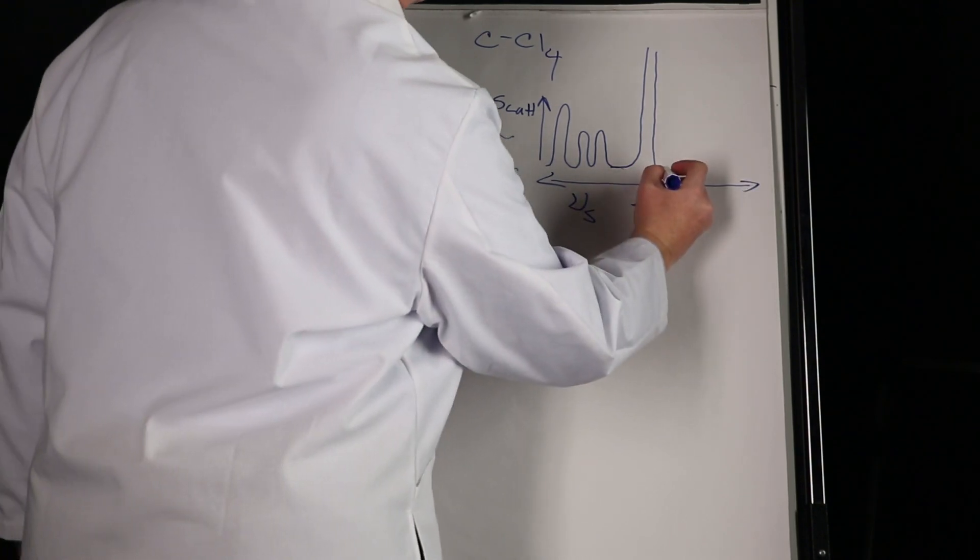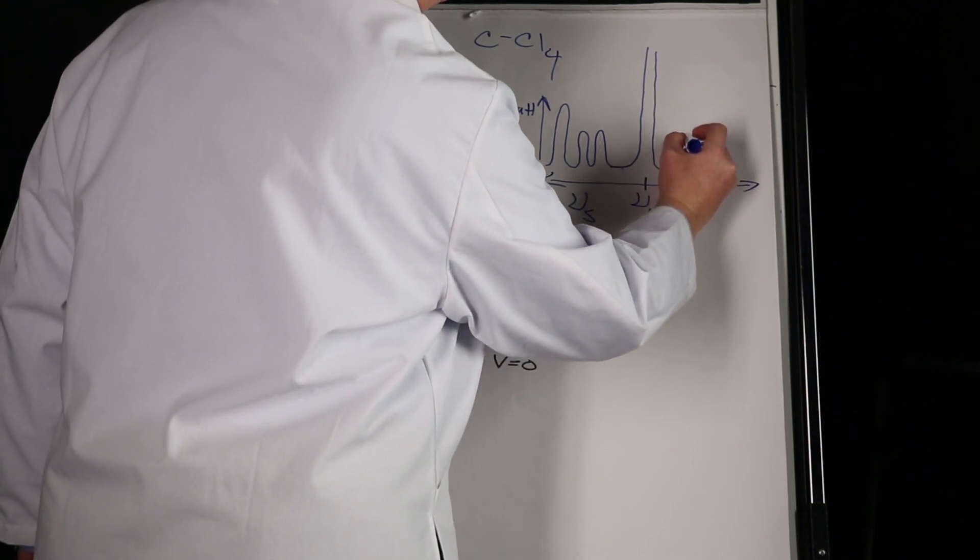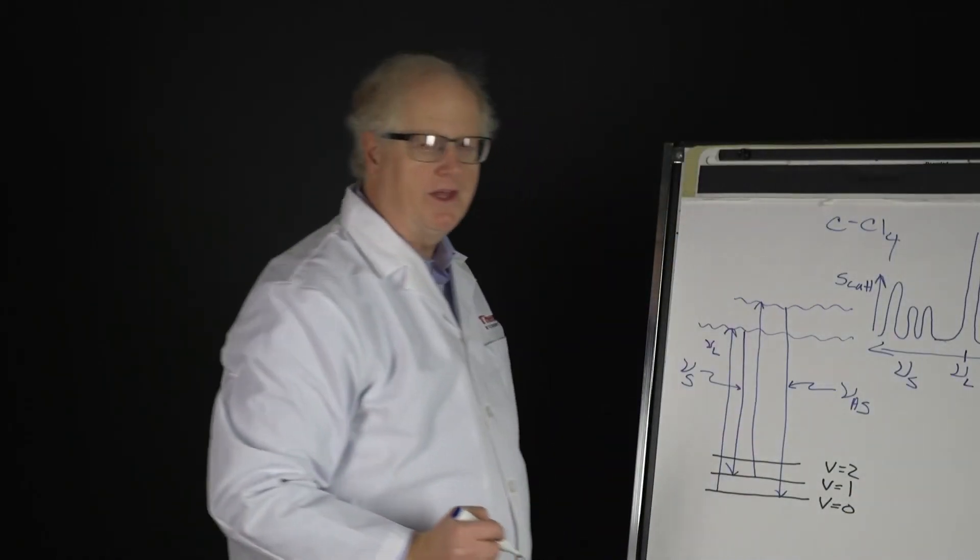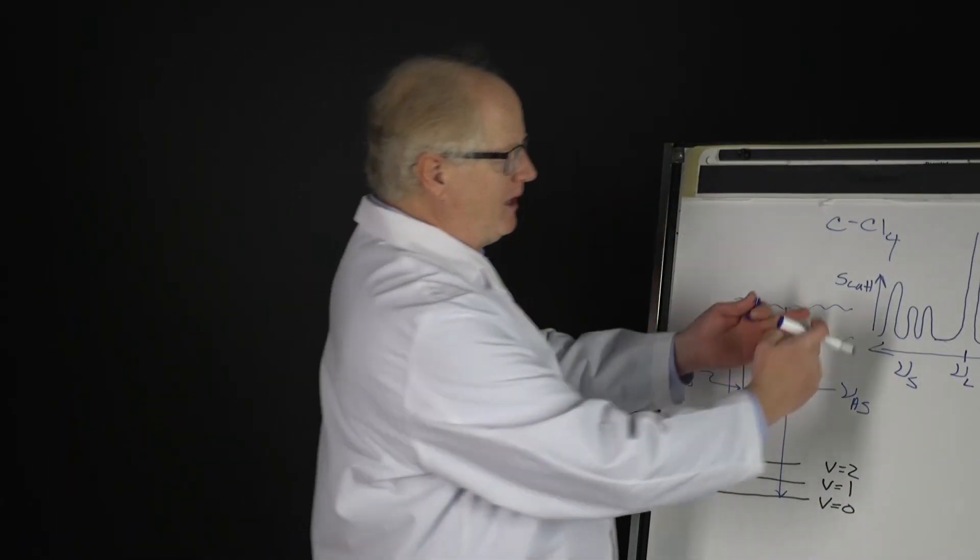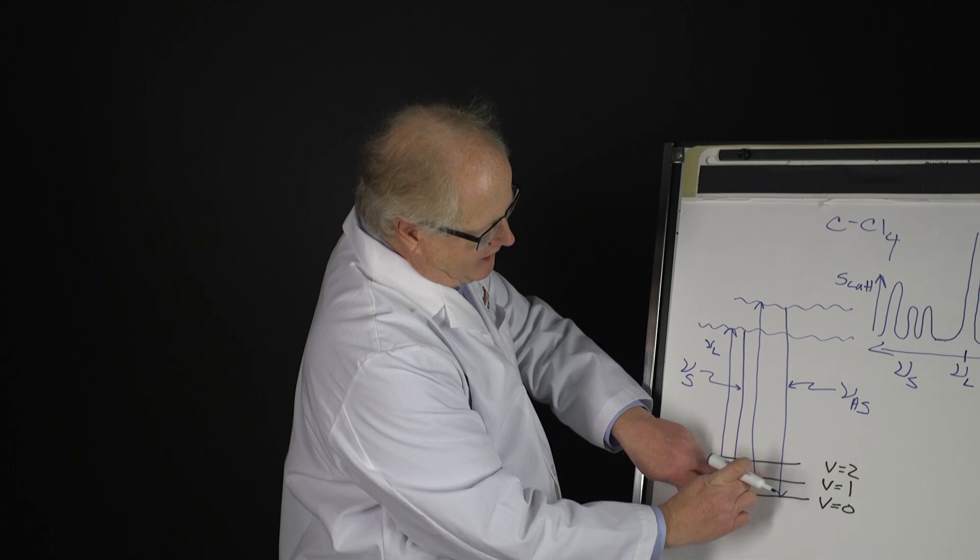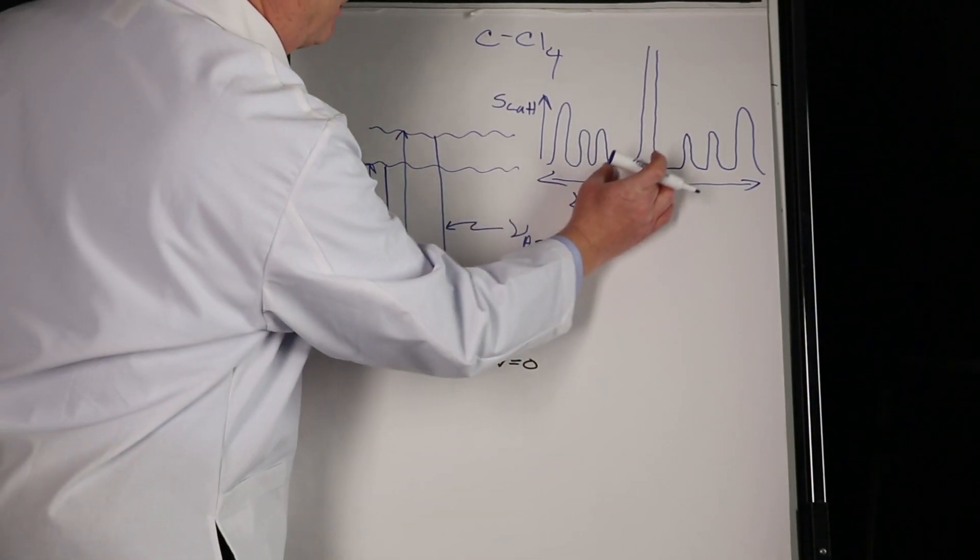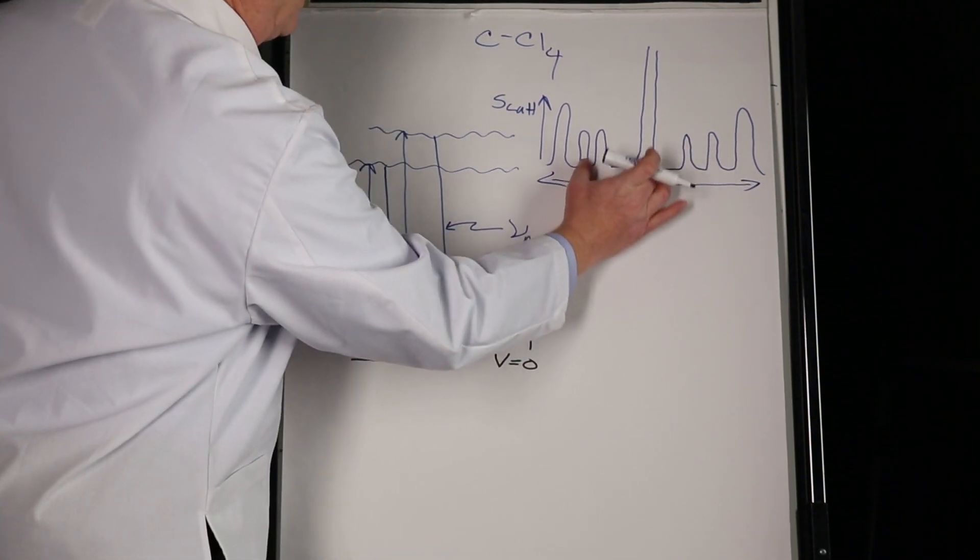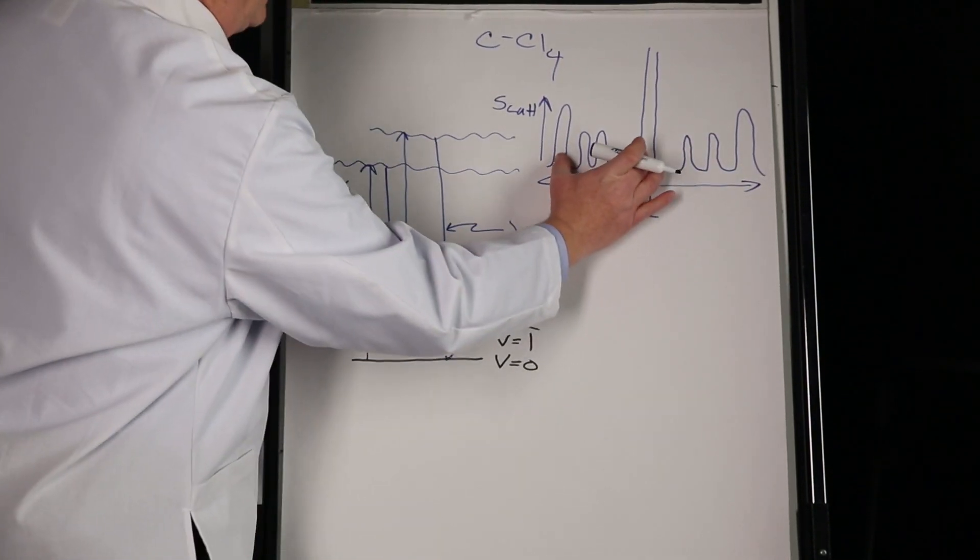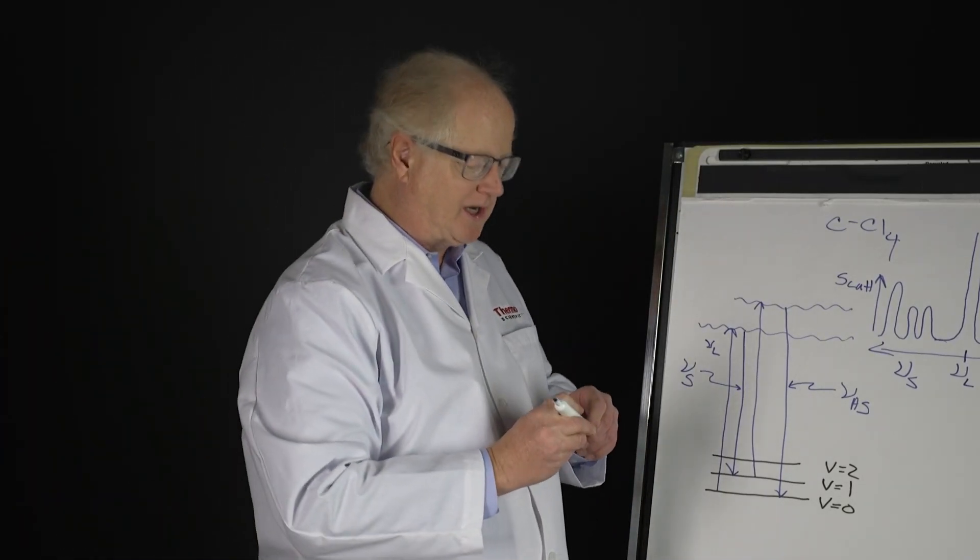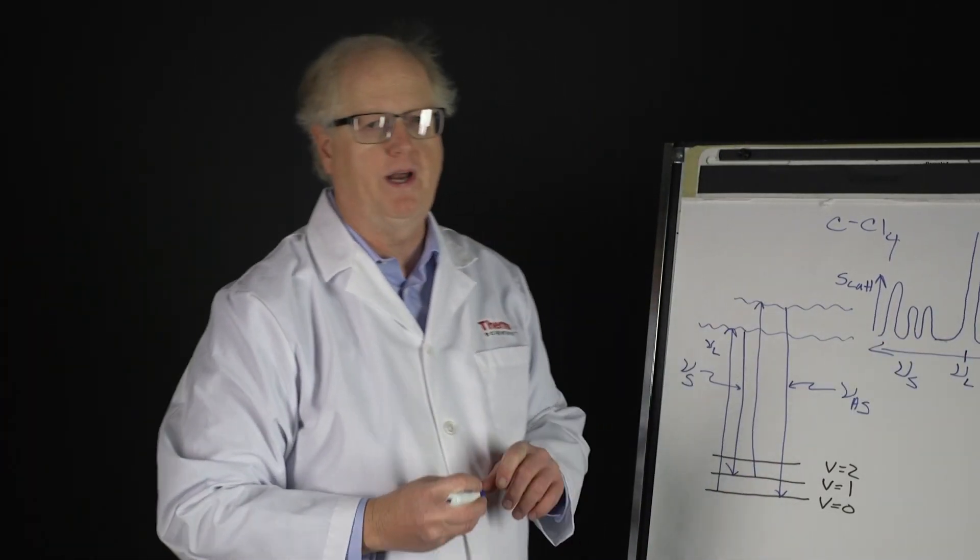If we look on the anti-Stokes side, what we would anticipate is the same thing. We would expect it to be a mirror image, because the energy here would just simply be higher, but by the same increments. So whatever that energy is is where that would be, and we would expect everything is good. We'd say to avoid fluorescence, let's go over here.